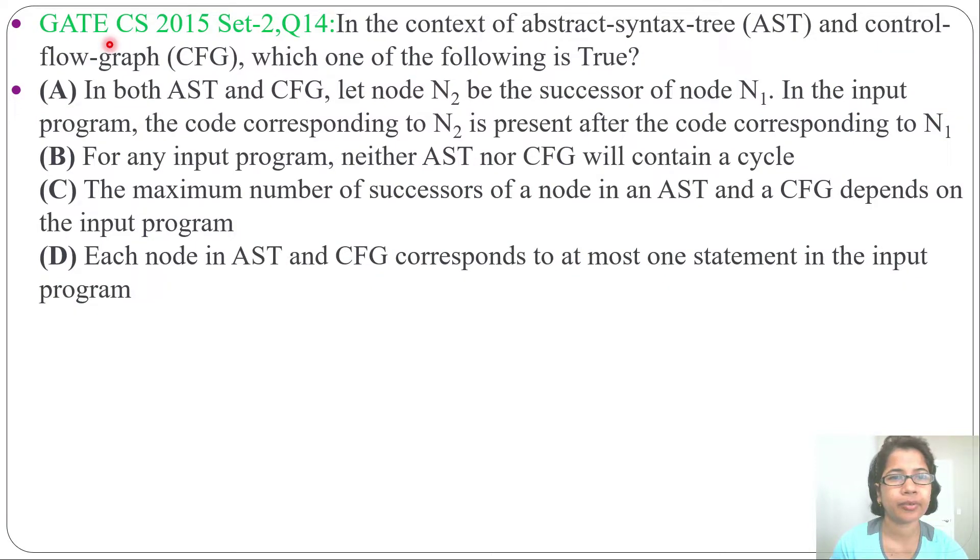Hi, let's solve one previous question of intermediate code generation compiler. This question was asked in GATE CS 2015 set 2 question number 14. In the context of abstract syntax tree and control flow graph, which one of the following is true? In four options, four statements are given and it is asking which one of the following is true.